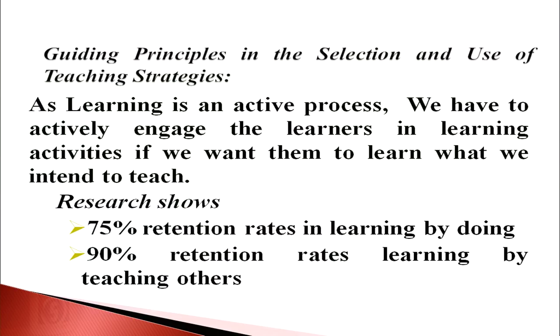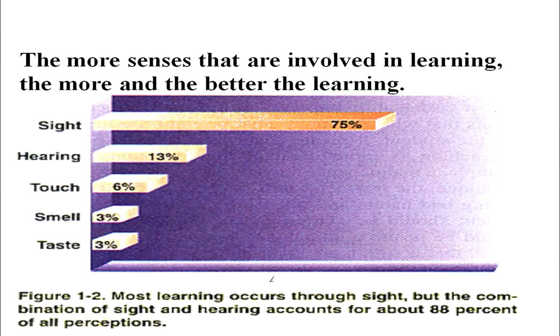What are the guiding principles in the selection and use of teaching strategies? As learning is an active process, we have to actively engage learners in learning activities. Research shows 75% retention rates in learning by doing, while 90% retention rates occur when learning by teaching others. The more senses involved in learning, the better — sight and hearing together account for 88% and make learning better; ideally, all five senses are used.